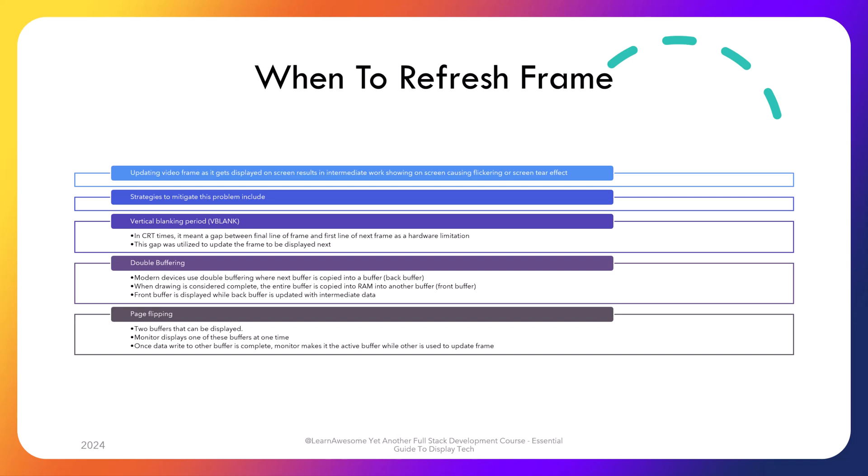There are several ways to handle this. In CRT times, computers utilized a blanking period between the end of writing a frame and preparing to write the next frame to perform copy operations. It was a hardware limitation of CRT but provided room for software to prepare the next frame to display without glitches. That interval was called V-blank, or vertical blanking period.